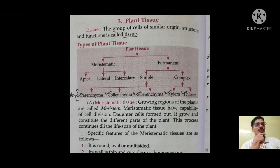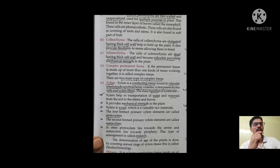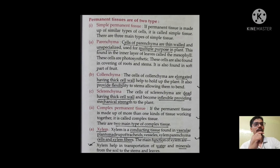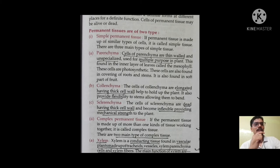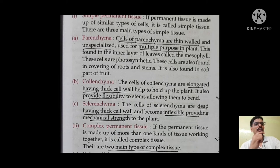The first topic is plant tissues — a group of cells of similar origin, structure and function. We'll talk about meristematic and permanent tissues. From the exam viewpoint: colenchyma, sclerenchyma, and complex permanent tissue — xylem and phloem. Permanent tissues are of two types: simple permanent tissues and complex permanent tissues. Simple permanent tissues are made up of similar cells, with three main types: parenchyma, colenchyma, and sclerenchyma.